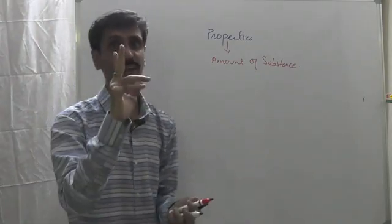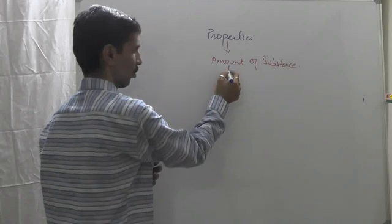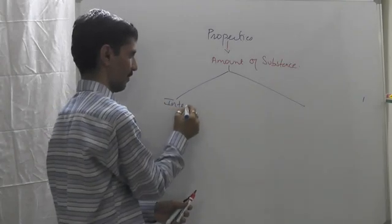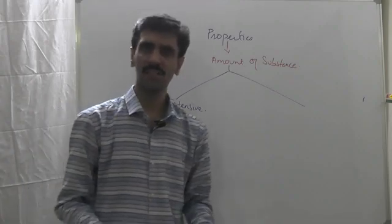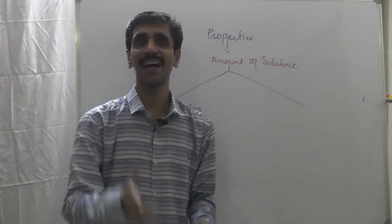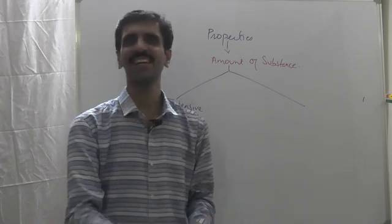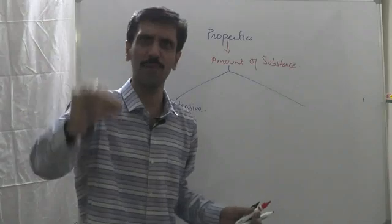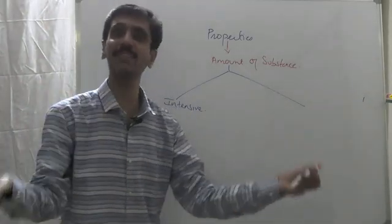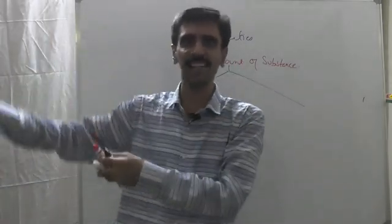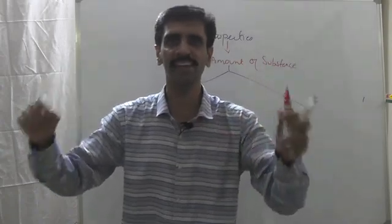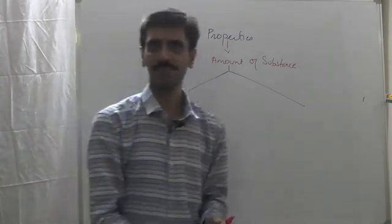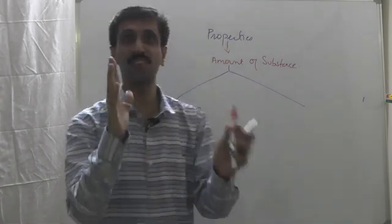So whenever we talk about the properties of the system, we are actually relating it to the amount of the substance. In one case, the values are dependent, and in the other case, the values are independent. These are the two possibilities, and therefore we say that there are two types of properties of the system. The first one we call intensive properties. For example, if I ask you the boiling point of water, everybody will say it's 100 degrees Celsius. So this is one category.